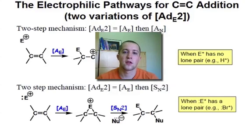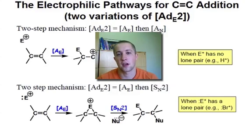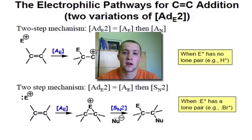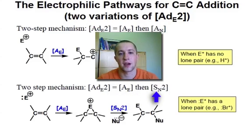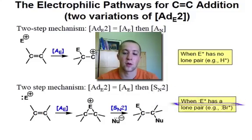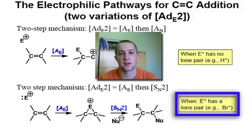In the final segment, we're going to go over the second variation of electrophilic addition to an alkene, which involves an A sub E step followed by an SN2 step, and will occur when our electrophile has a lone pair.